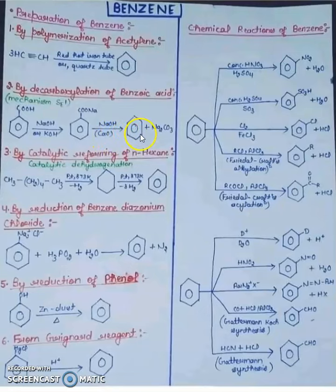By catalytic reforming of n-hexane, you can see n-hexane. This is your cyclohexane, now this is your benzene.